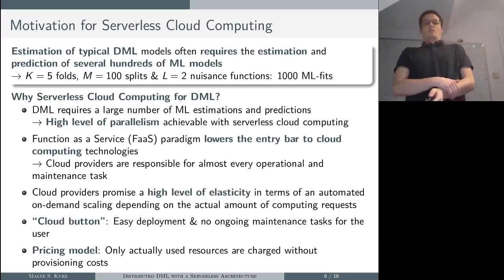What's the motivation for using serverless cloud computing here? First of all, we now know we have to estimate a lot of ML models. For example, with five folds, 100 splits, and two nuisance functions, we have to estimate 1000 ML models. With serverless cloud computing we can achieve a high level of parallelism. Further, the Function-as-a-Service paradigm lowers the entry barrier to cloud computing technologies for typical users of double machine learning like data scientists or econometricians.